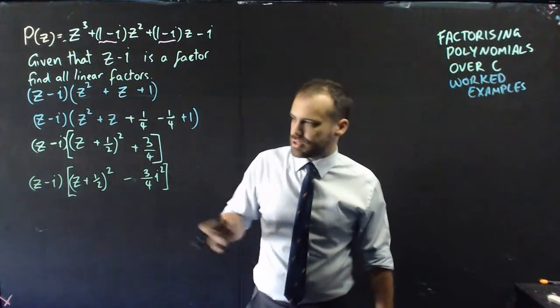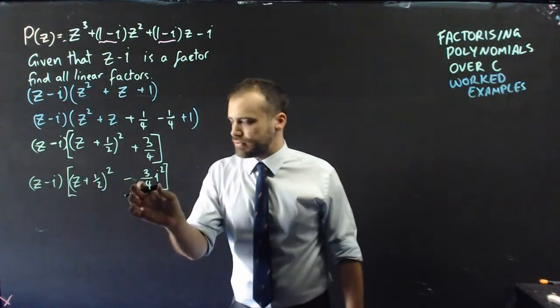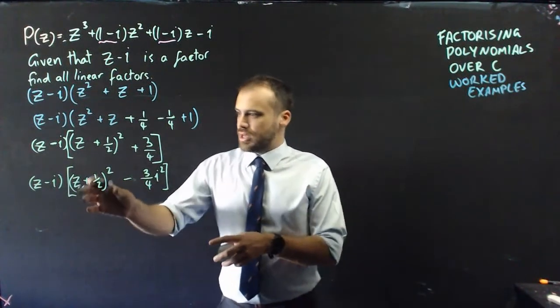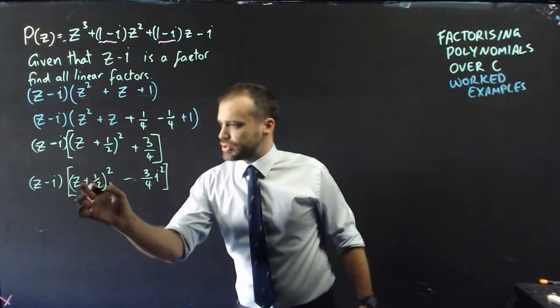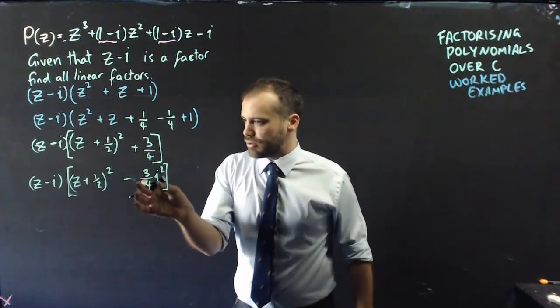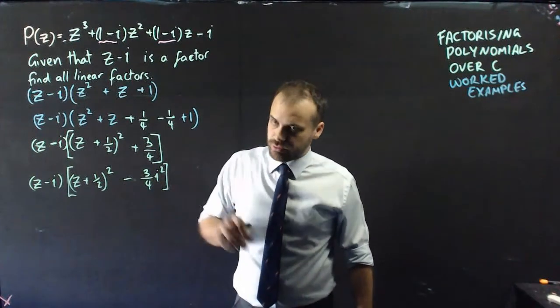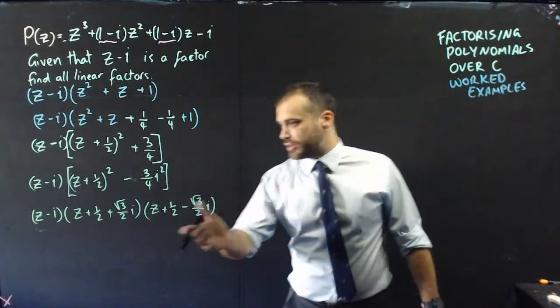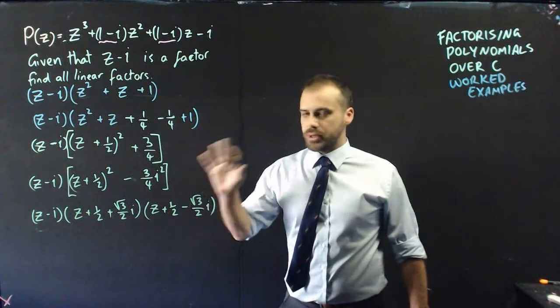You've done this before when you were factorizing quadratics. So, this difference of 2 squares can now be factorized as the root of that, or just that bit there, plus the root of that, that bit there, minus the root of that. And, that is our final factorized form here.